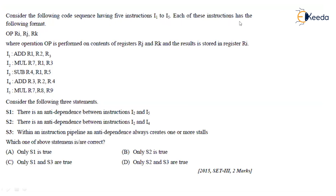Each of these instructions has the following format: Operation followed by RI, RJ, RK. Where the operation is performed on the contents of registers RJ and RK, and the result is stored in register RI.